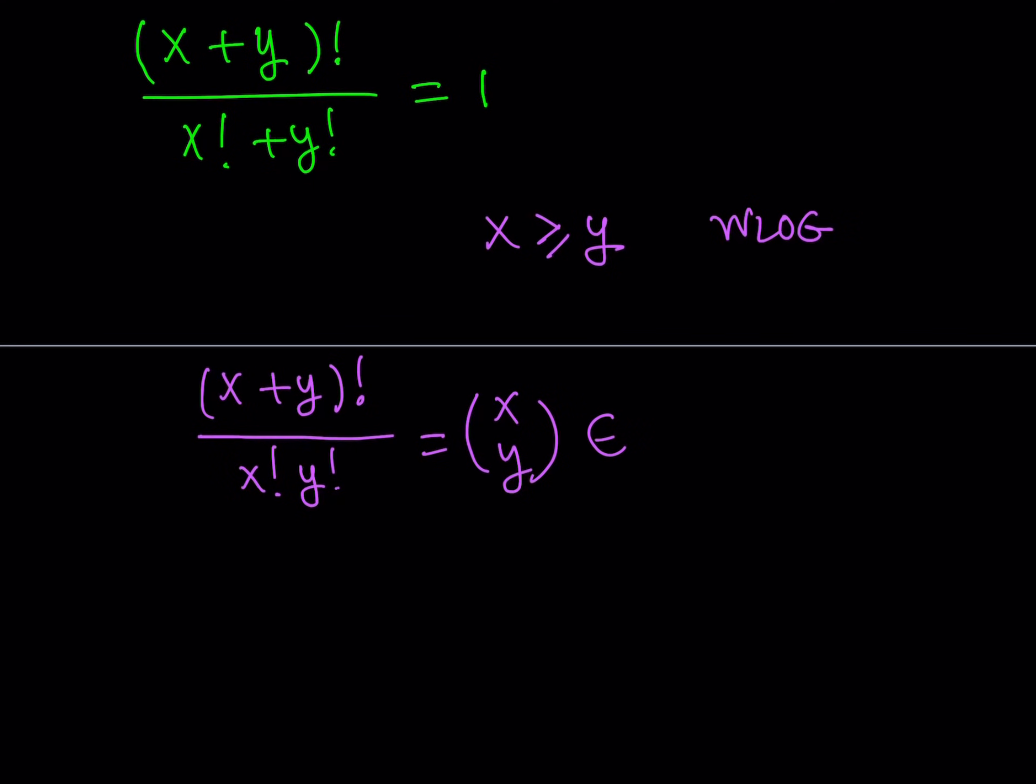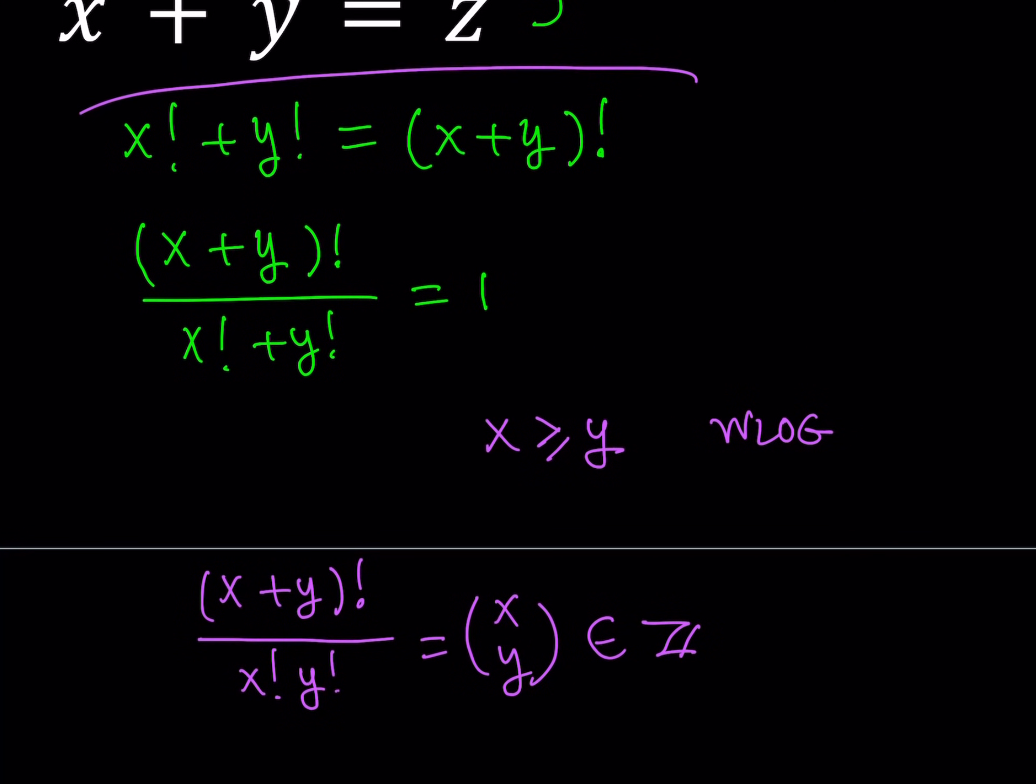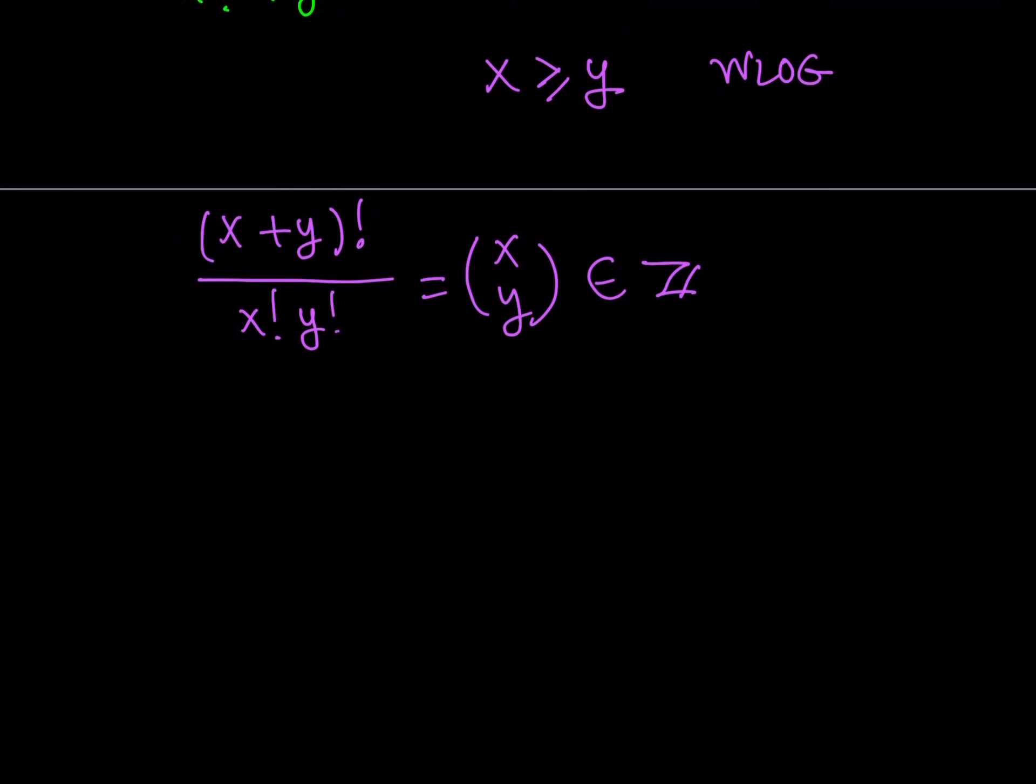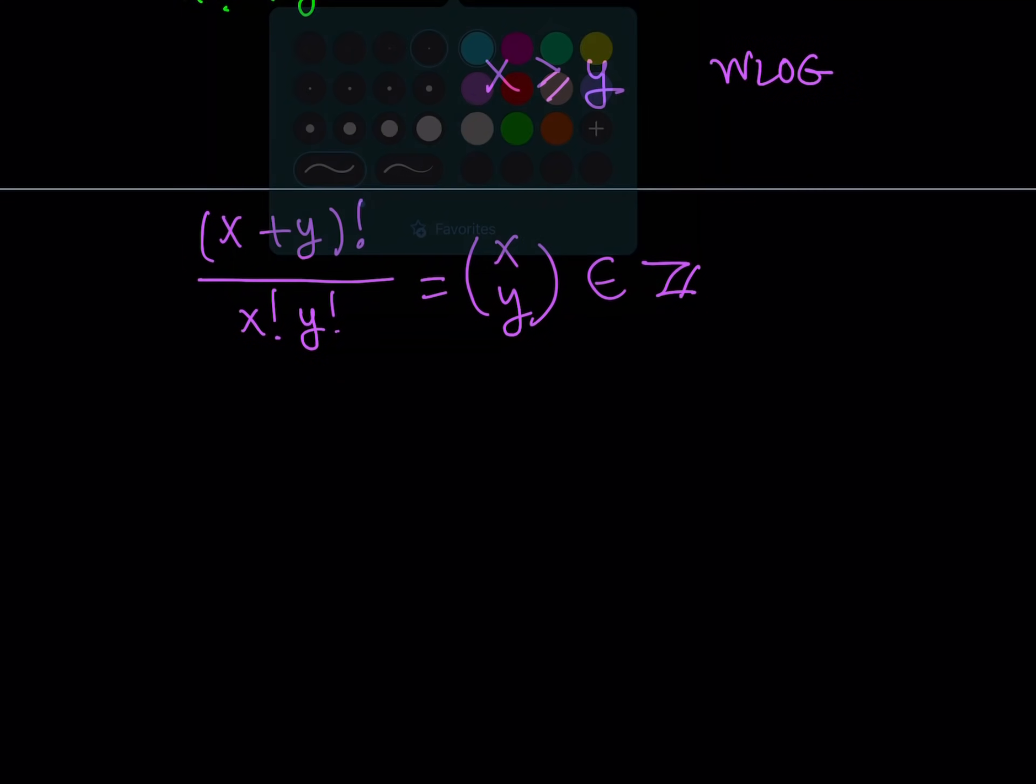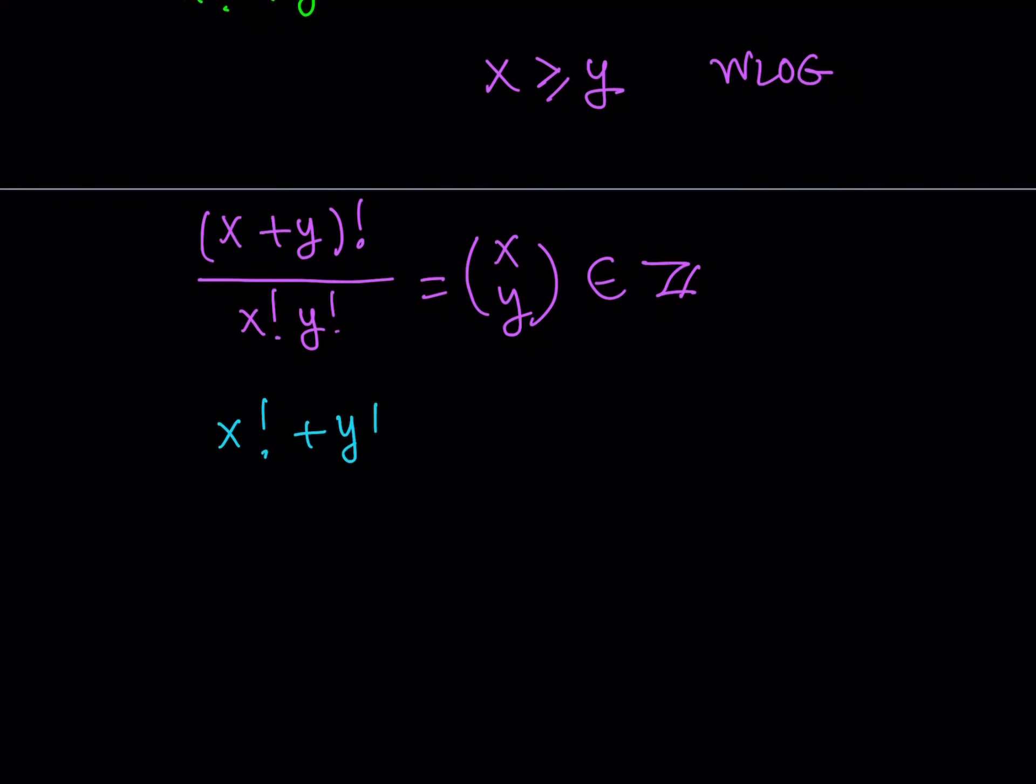Now, in this case, we're talking about an integer here, but look at the left-hand side. Does that mean anything? Not really. But here's the thing. If you go ahead and replace the numerator with something, it'll make sense. Since we know that x plus y factorial equals x factorial plus y factorial, we can just do the replacement. That gives us something nice. x factorial plus y factorial divided by x factorial y factorial equals x choose y. Therefore, this is an integer.